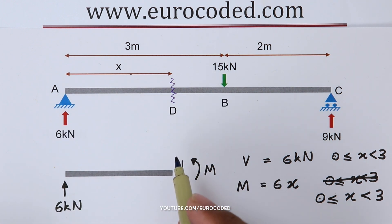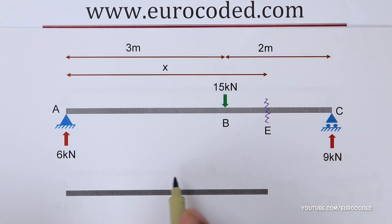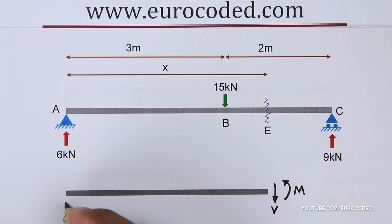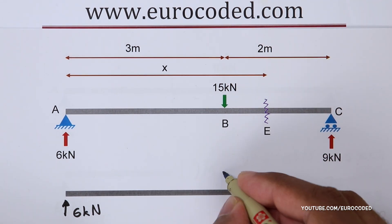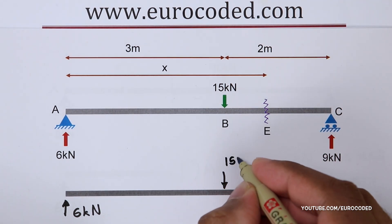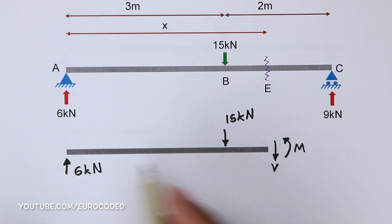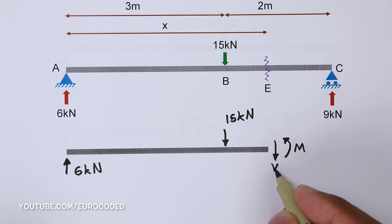Now it's time to look at the rest of the beam. I'm going to take an imaginary cut at point E and draw the free body diagram for beam section A–E. Same as before, we have a shear force V and a bending moment M, along with the support reaction of 6 kN. Additionally we have the externally applied force of 15 kN.